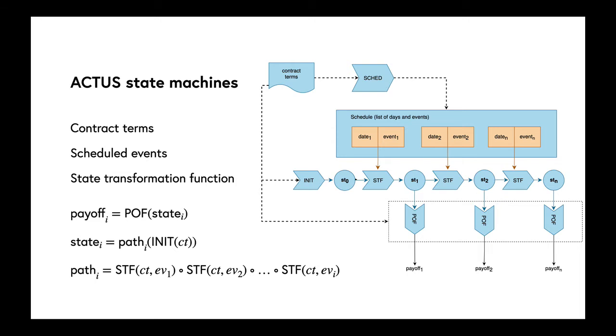The execution of the contract is modeled as the execution of a state machine. From the contract terms, we have a description of scheduled events. We can build a state transformation function, and at any particular state there might be a payoff made. The state is described by iterating the state transition function, taking whatever events occur at that particular schedule point.